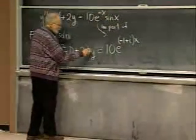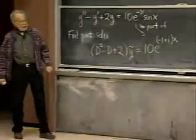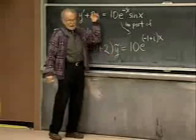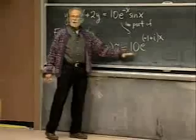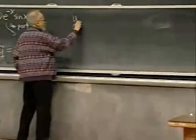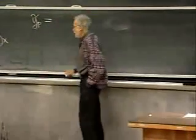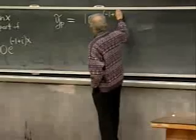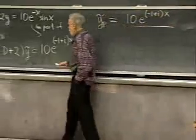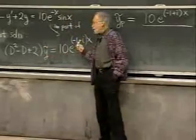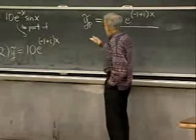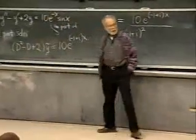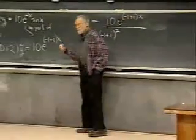Since this is a complex equation, I'll call the solution ỹ (y-tilde) to indicate that we'll need to take the imaginary part. We're looking for the complex particular solution to the complexified equation. The complex particular solution can be written down immediately: it is 10·e^((−1+i)x) divided by p(−1+i), where α = −1+i is substituted into the polynomial p(D) = D² − D + 2.